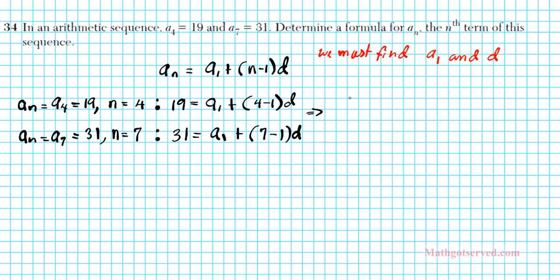In order for us to write down an nth term formula, we need to find a1 and d and then plug it into this formula. Let's simplify these two equations. This becomes a1 plus 3d equals 19, and this one becomes a1 plus 6d equals 31. We have a system of equations here. We can solve this by elimination.